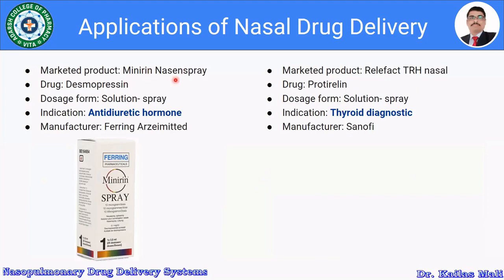Minirin Nasal Spray contains the drug desmopressin. It is available in the market as a solution spray form and is used as an anti-diuretic hormone. It is developed by Ferring. This is the Minirin spray.